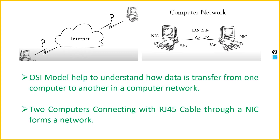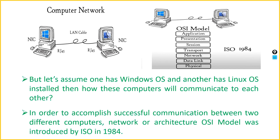By connecting through an RJ45 cable and through a NIC, two computers form a network. But let's assume one machine has a Windows operating system and another has a Linux operating system. How will these computers communicate with each other?